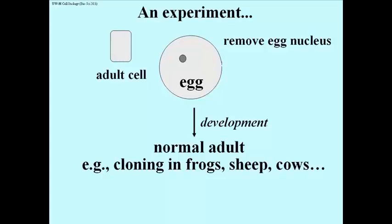this egg with an adult nucleus in it, instead of its normal nucleus, can develop into a normal adult. And this is the essence of cloning in frogs, and sheep, and cows, and more recently cats and dogs, and you name it, and eventually I'm afraid also humans, regardless of the ethics of the whole thing. But this is cloning organisms the way you've read about this. Newspapers have seen it in the specials on TV.